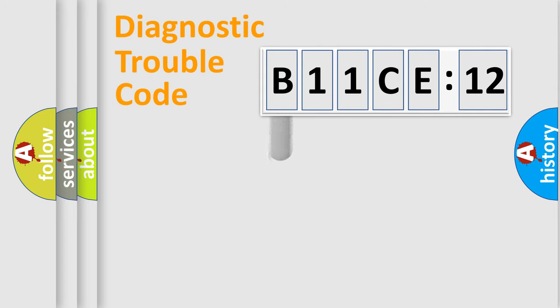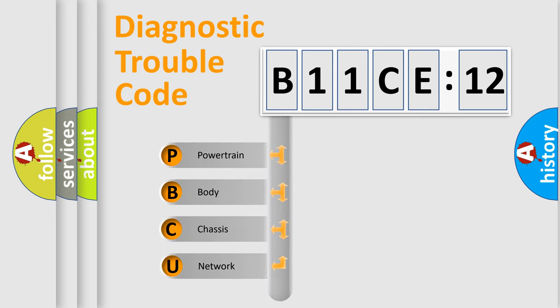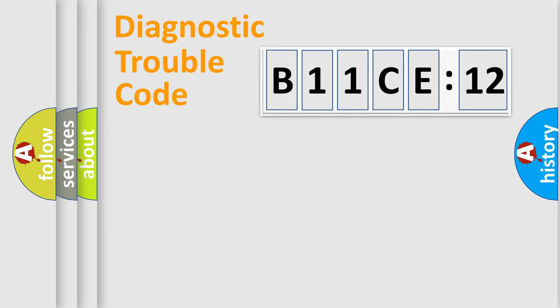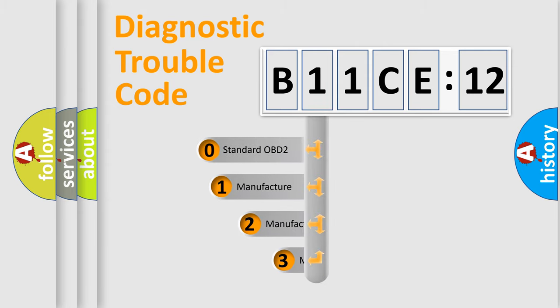First, let's look at the history of diagnostic fault code composition according to the OBD2 protocol, which is unified for all automakers since 2000. We divide the electric system of automobile into four basic units: Powertrain, Body, Chassis, and Network. This distribution is defined in the first character code.